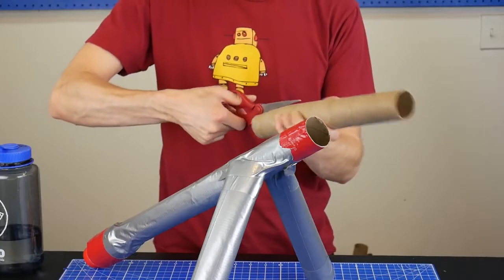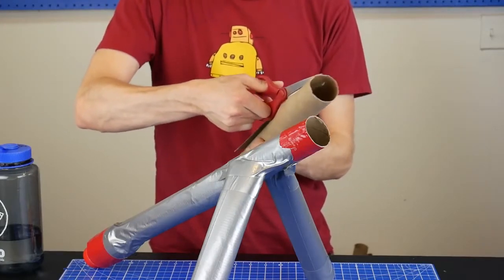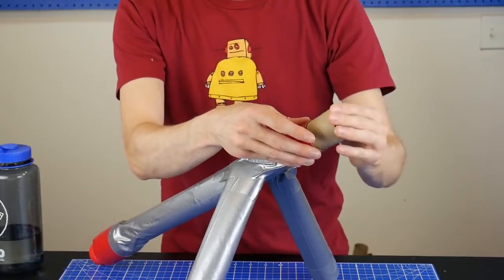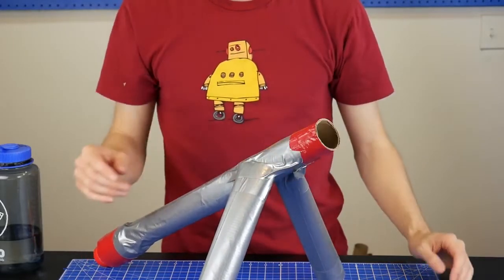If the barrel is too big and there's a lot of space around the ping pong ball, it won't work very well. You can narrow the inner diameter of the barrel by cutting another tube down the middle and fitting it inside.